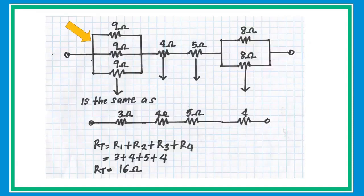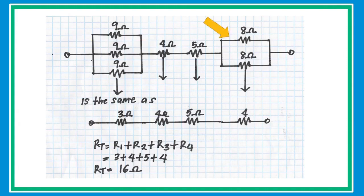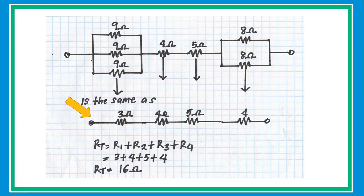The next example looks hard, but it's actually simple with a few tricks. The three 9-ohm resistors are connected in parallel — divide 9 by 3 to get an equivalent resistance of 3 ohms. Next, the two 8-ohm resistors are connected in parallel with the same value, so take half of 8 to get 4 ohms. The circuit is now a simplified series circuit. Add all the individual resistors to get a total equivalent resistance of 16 ohms.